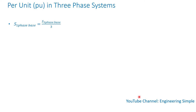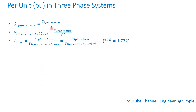Now, per unit in three-phase systems. As we know, the single-phase apparent power is S_three-phase divided by 3. The line-to-neutral voltage is the line-to-line voltage divided by square root of 3. To calculate the base current, you can use either single-phase or three-phase quantities: single-phase apparent power divided by line-to-neutral voltage, or three-phase apparent power divided by line-to-line voltage times square root of 3.